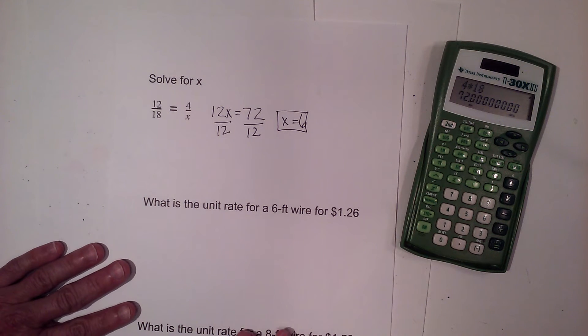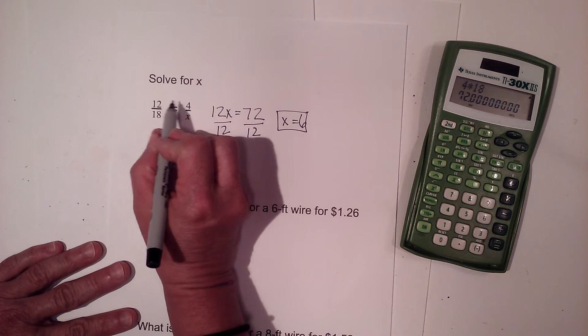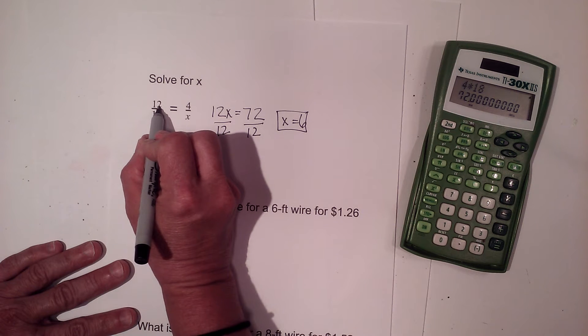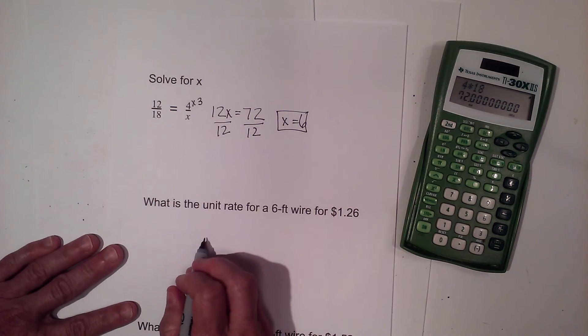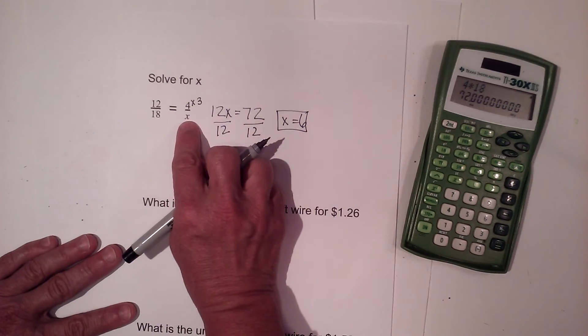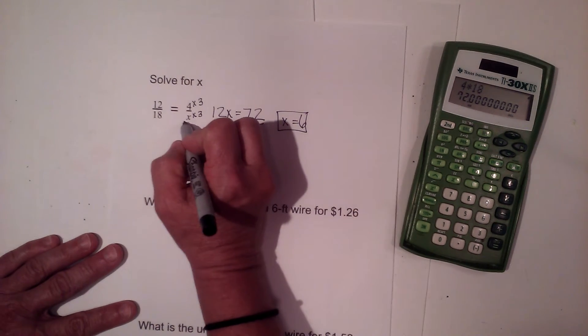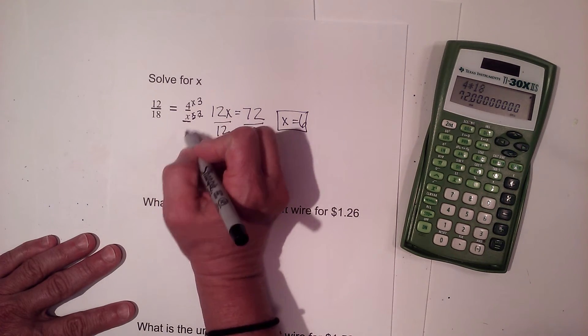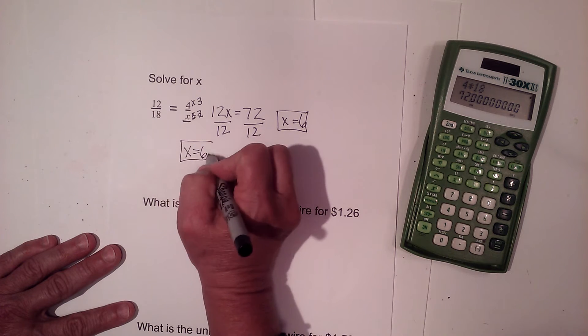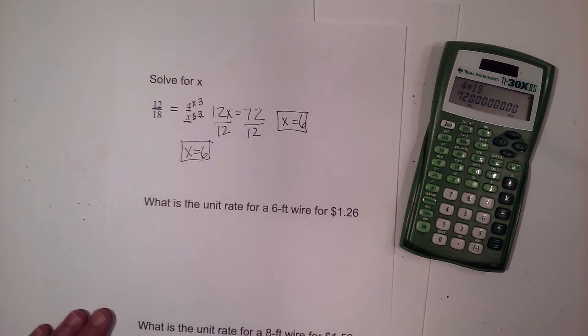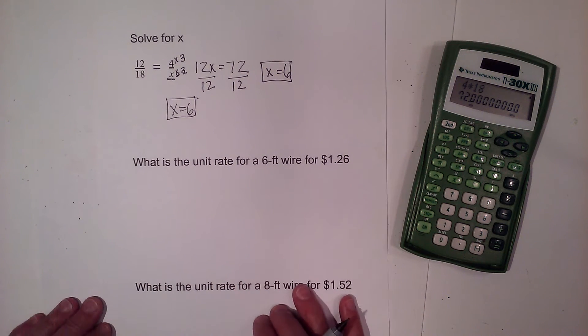The second method is this. I'm just going to compare. I can say 4 times what gives me 12? Well, 4 times 3 gives me 12. x times 3 would have to give me 18. So what number times 3 would give me 18? x would have to be 6. So that's more just common logic that you can figure those out. You can use either method.